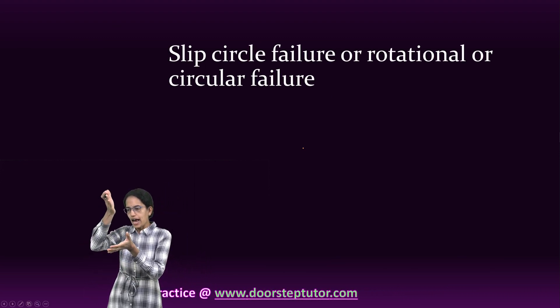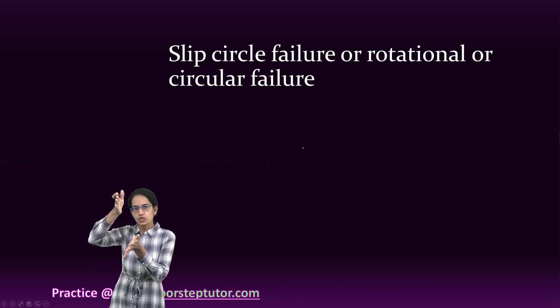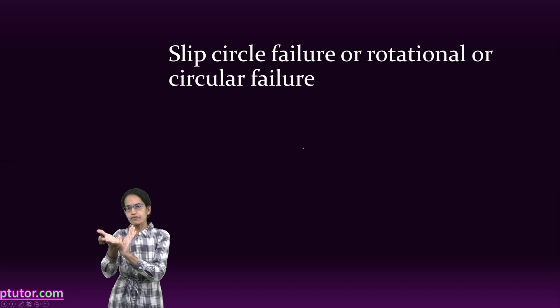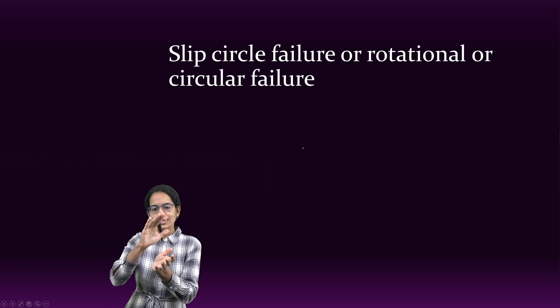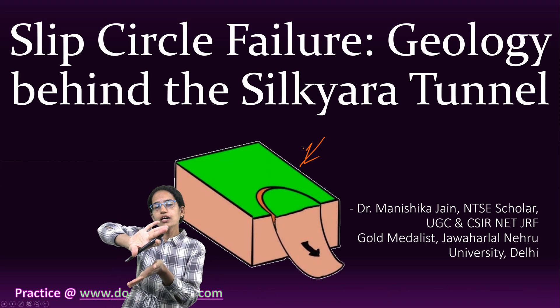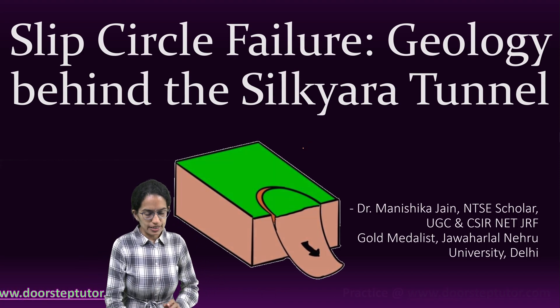A landslide occurs when a mass of soil or rock moves along its own surface, and this is what is called a circular failure. As you can see in the picture, along this part there is a rotation or movement that occurs.